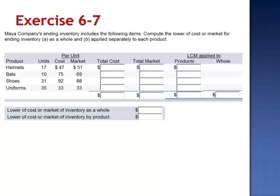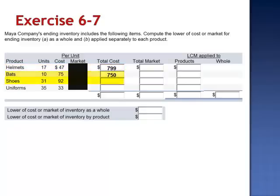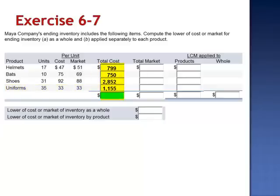The first thing we do is calculate the total cost of each product. 17 helmets at $47 per helmet is $799. 10 bats at $75 per bat is $750. 31 pairs of shoes at $92 per pair is $2,852. And 35 uniforms at $33 apiece is $1,155. The total cost of the inventory is $5,556.